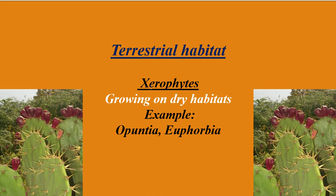The next category is xerophytes. Xerophytes are the plants which prefer to grow in dry habitats, that means soil where the water level is too low. Examples of xerophytes are Opuntia and Euphorbia. This is the picture which indicates the Opuntia species.